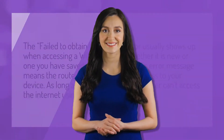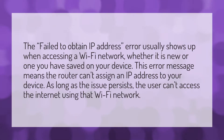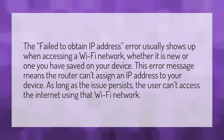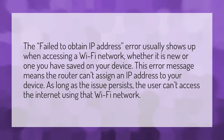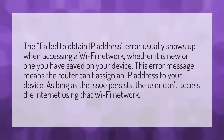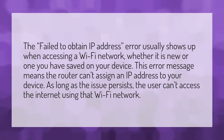The 'failed to obtain IP address' error usually shows up when accessing a Wi-Fi network, whether it is new or one you have saved on your device. This error message means the router can't assign an IP address to your device. As long as the issue persists, the user can't access the internet using that Wi-Fi network.